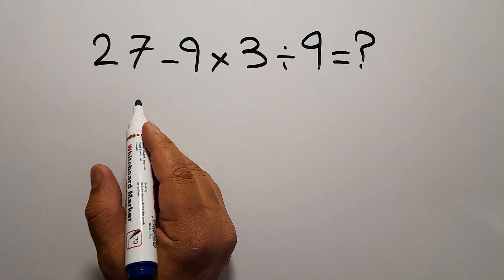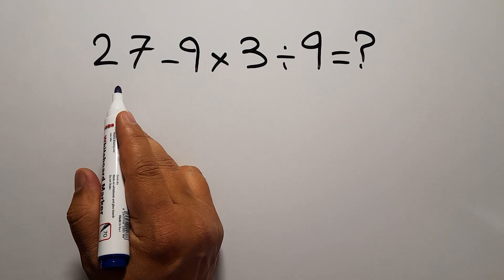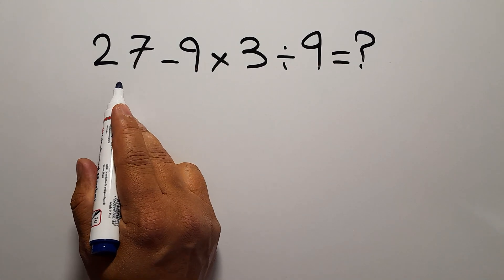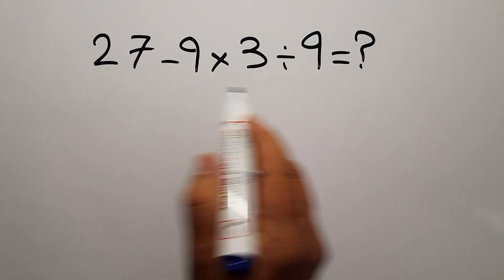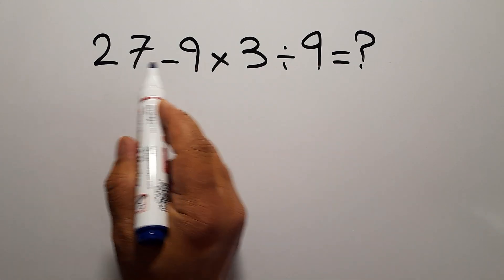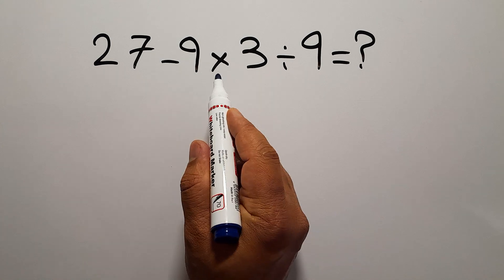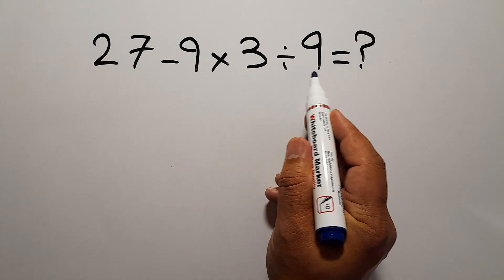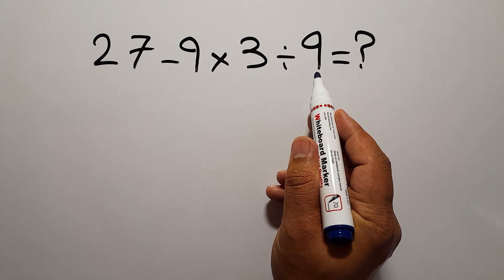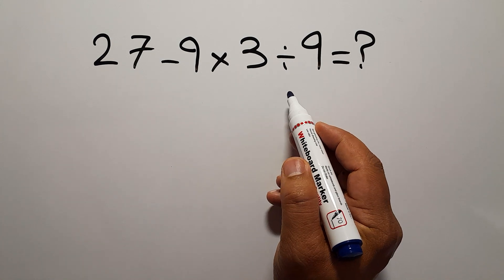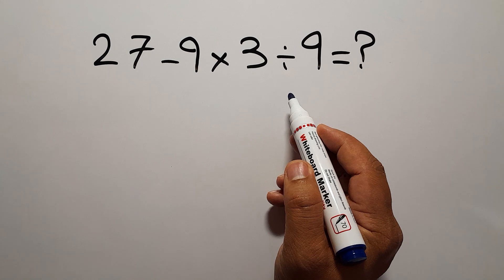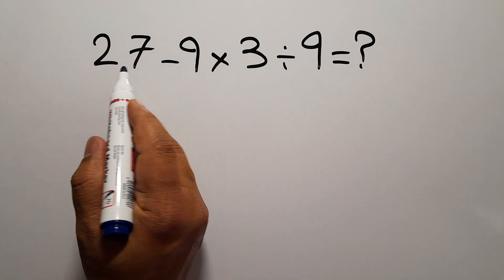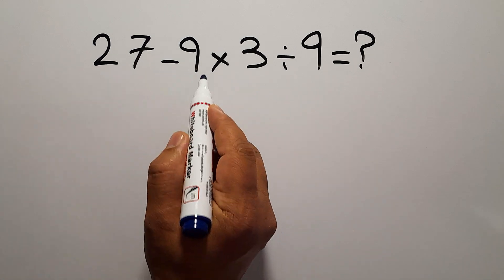Hey guys, welcome to Math Joy. In this video we want to find the value of this expression: 27 minus 9 times 3, then divided by 9. Are you ready to solve? Let's go.